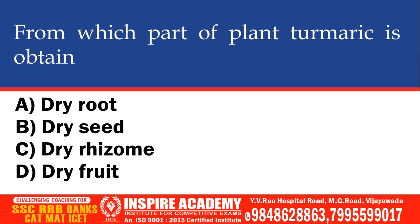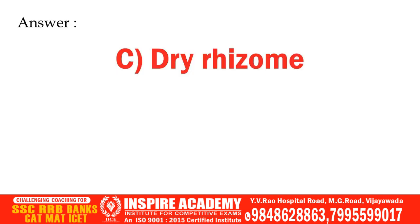Turmeric is obtained from which part of plant? Options: Dry root, Dry seed, Dry rhizome, Dry fruit. The correct option is Dry rhizome.